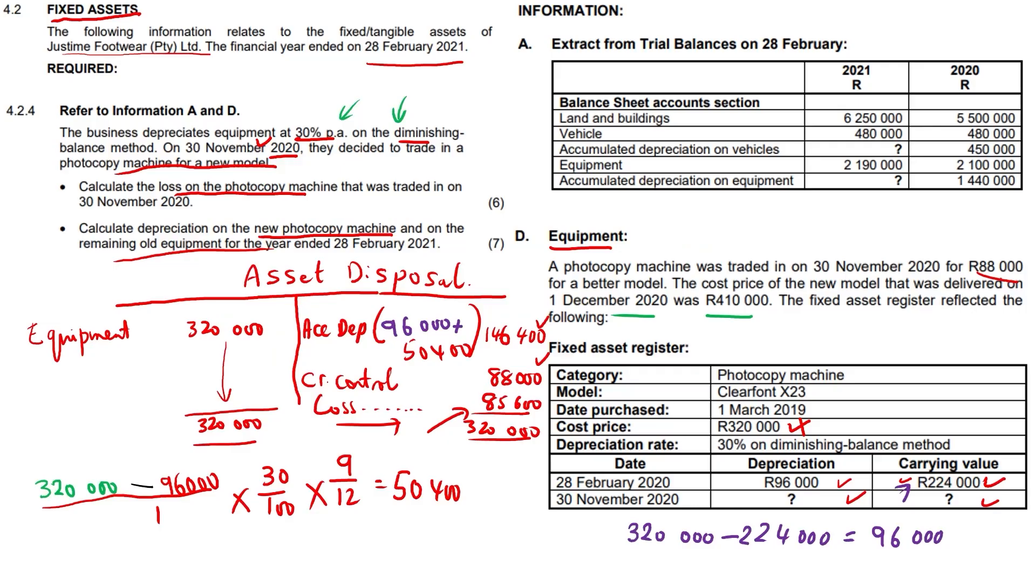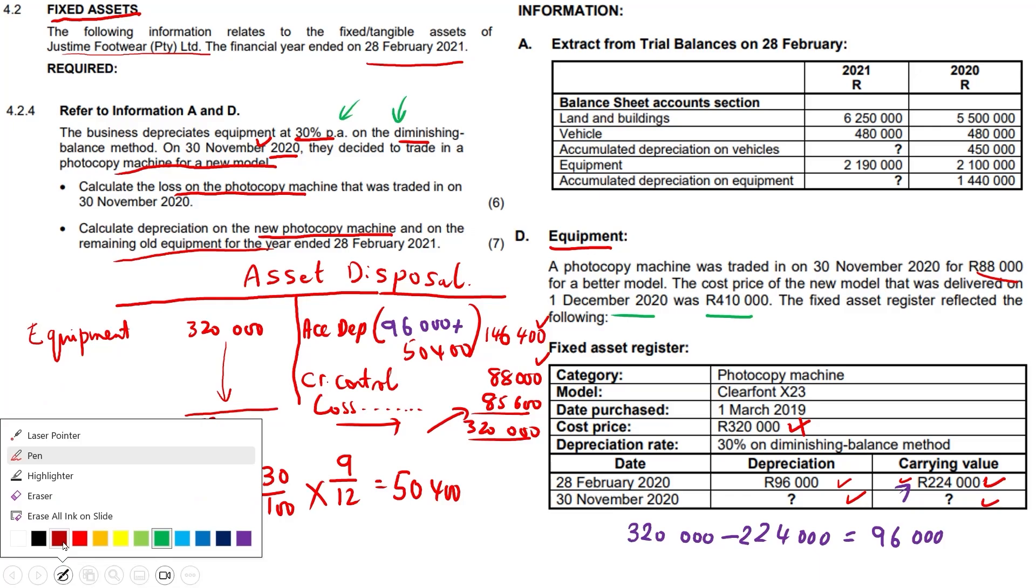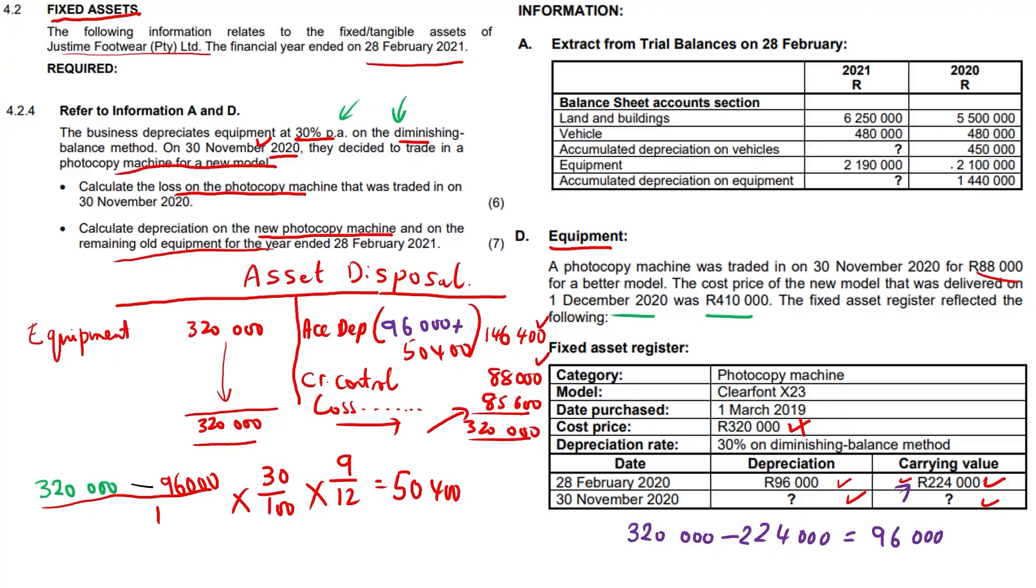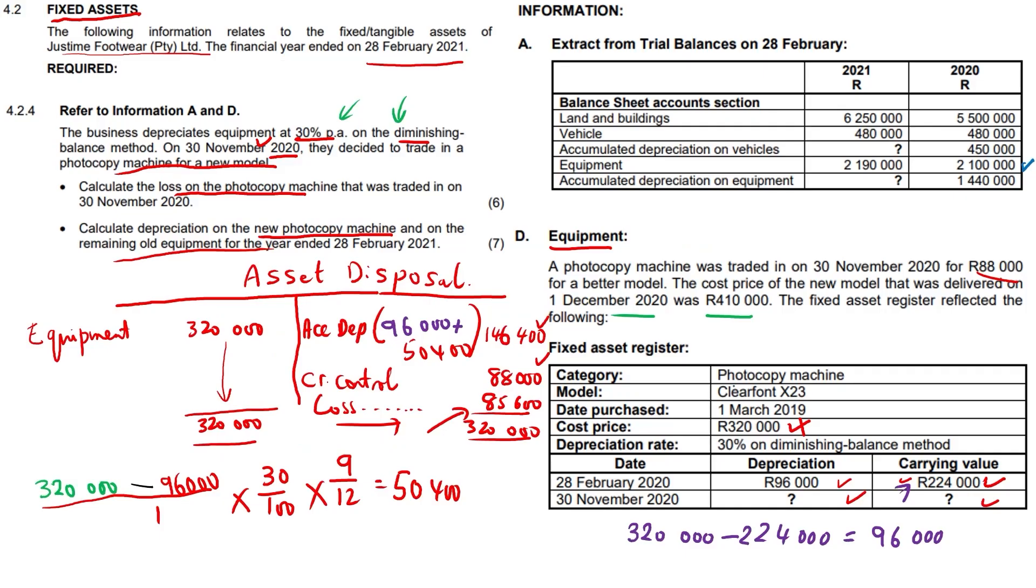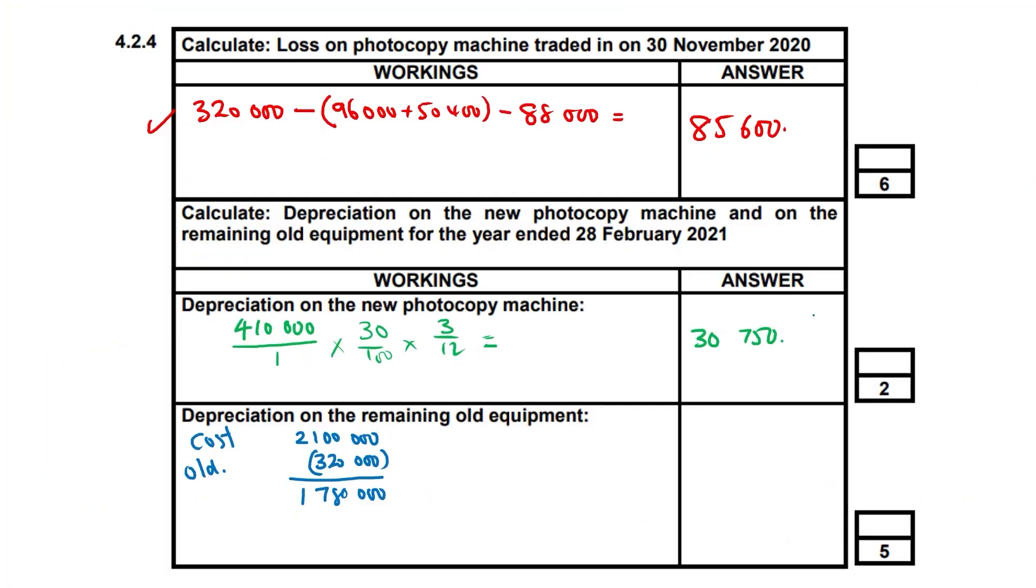Depreciation on new photocopying machine, reasonably straightforward. However, there's a fair bit of complexity on this one with the remaining equipment that stayed with us. Equipment cost at beginning of year: $2.1 million. Let's bring that into account. The old one that we sold cost us $320,000. We remove that and arrive at $1,780,000. There's the old one we sold which had a cost of $320,000, and there's all our equipment with a cost of $2,100,000, so we get our net cost of $1,780,000.